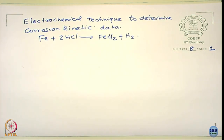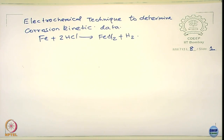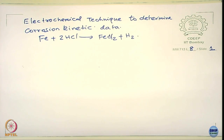For this you can write an Evans diagram. How many equilibria do you have in this to start with? Two. One is hydrogen gas in equilibrium with hydrogen ions. The second is iron in equilibrium with Fe²⁺ ions. There are two equilibria, and you have corresponding exchange current density, Tafel slopes, and equilibrium potential.